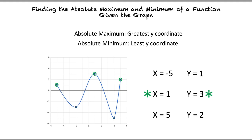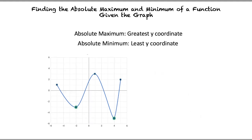Now that we know the absolute maximum, how do we find the absolute minimum? To find the absolute minimum, we will apply the same method, but instead of looking for the greatest y-value, we will look for the lowest y-value. There are two low peaks on this graph, one at x equals negative 2, and one at x equals 4.